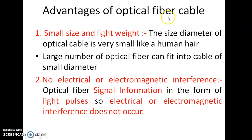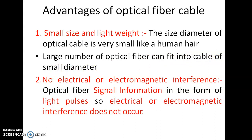What are the different advantages of optical fiber cable? The first advantage is small size and light weight. The diameter of the optical fiber cable is very small — like a human hair. A large number of optical fibers can fit into a cable of small diameter, meaning optical fiber is available in small size and light in weight. The core diameter is in micrometers and cladding is also in micrometers — that is very small, like a human hair.